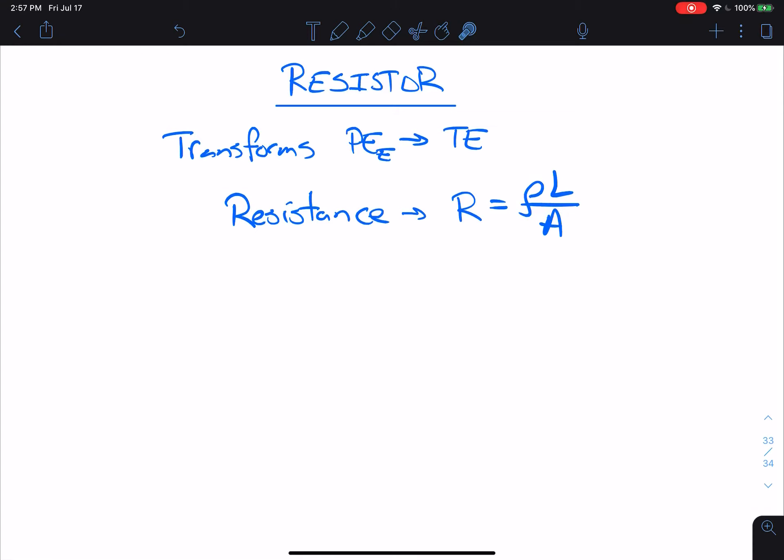Gauge and cross-sectional area aren't exactly the same, but if two wires have the same gauge, then they have the same cross-sectional area. So again: resistivity, length, and cross-sectional area.